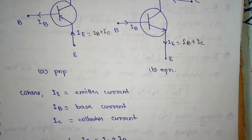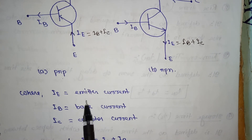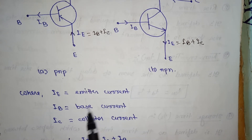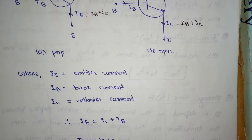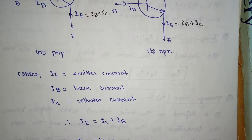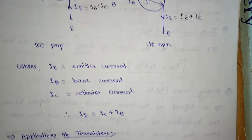Where IE is the emitter current, IB is the base current, and IC is the collector current. So, IE = IB + IC. This holds for both the NPN transistor and the PNP transistor.